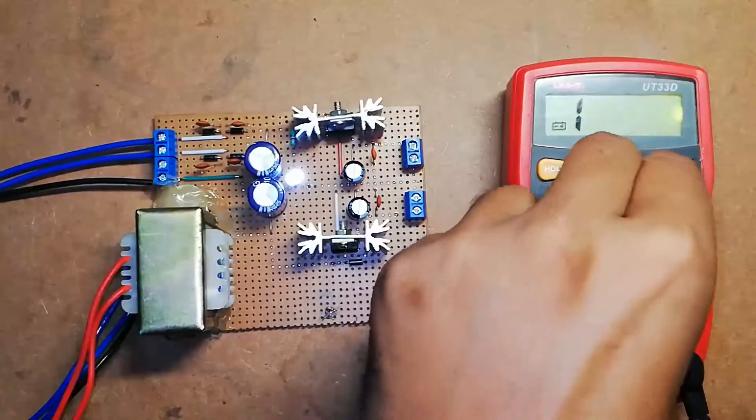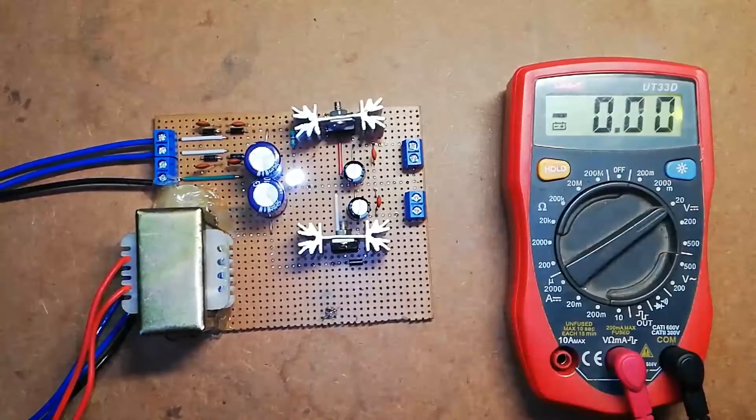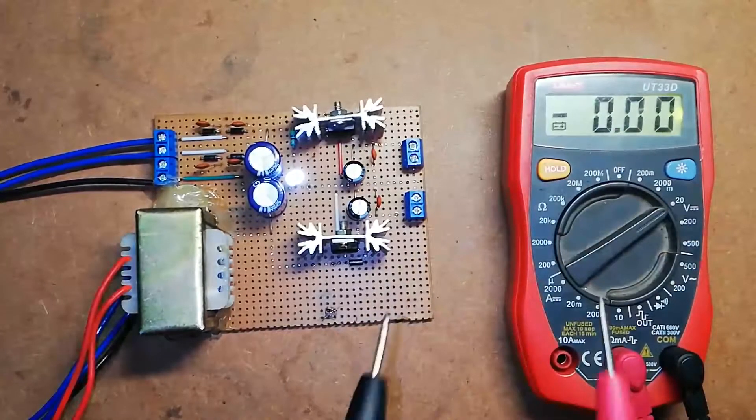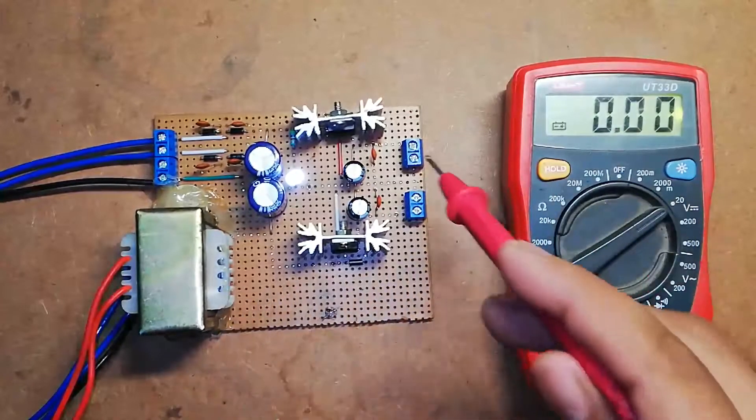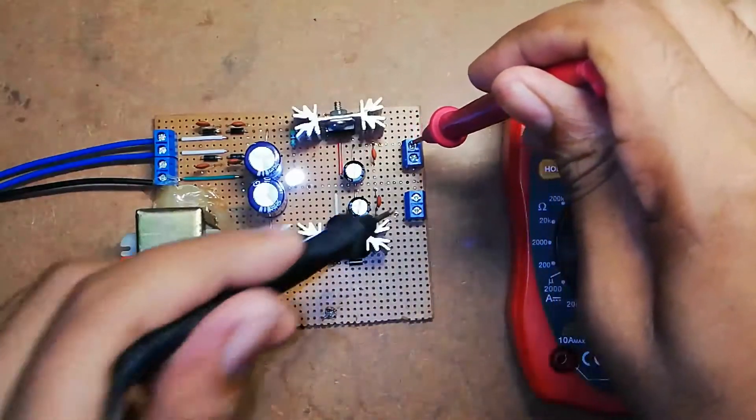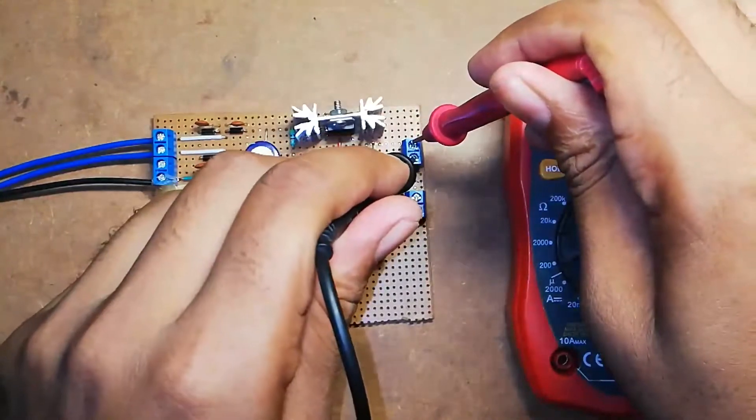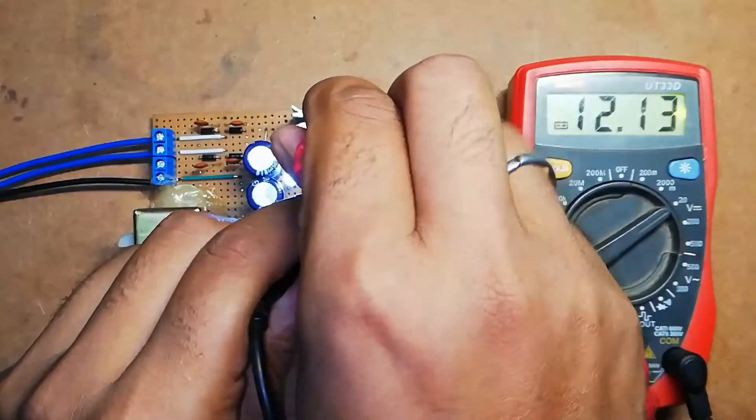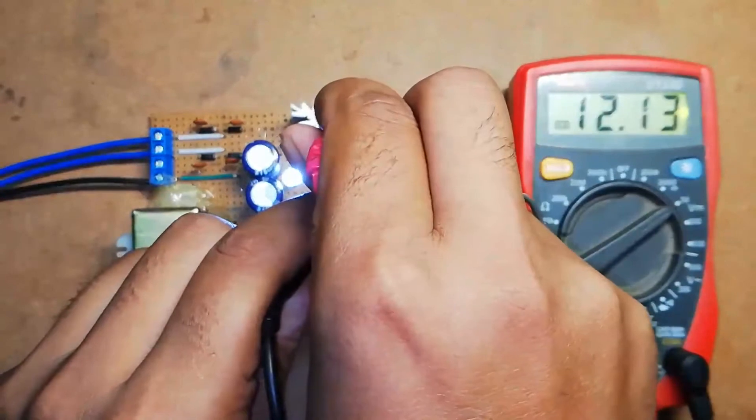Now adjust this multimeter to 20 volt DC measurement range and connect the multimeter probe to this output pin. This first pin is for positive 12 volts and the second is for negative. As you can see, it displays a voltage of 12.13 volts.